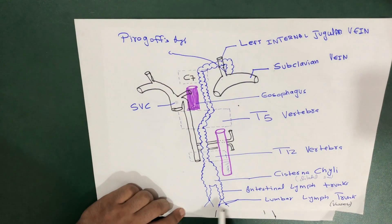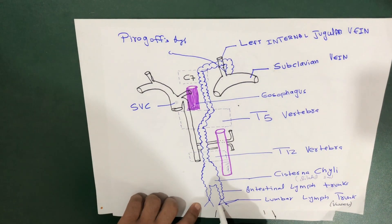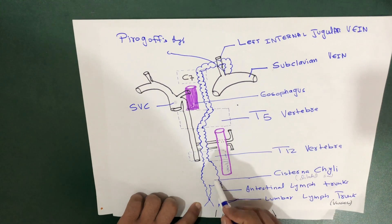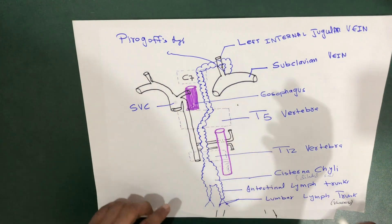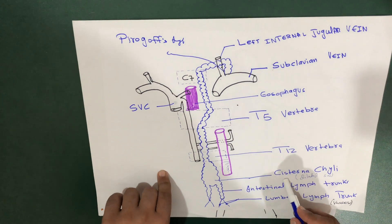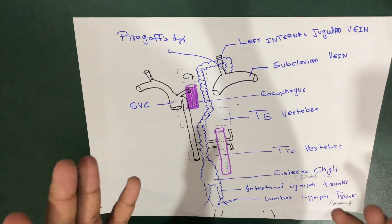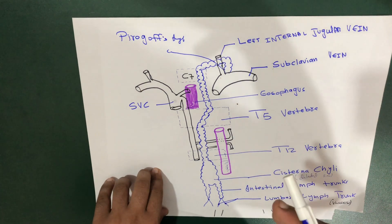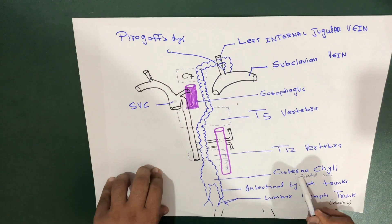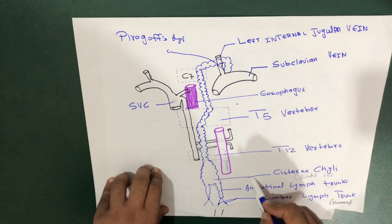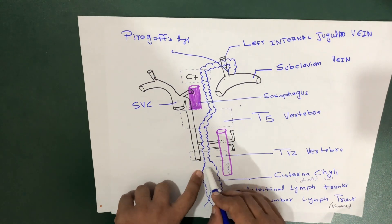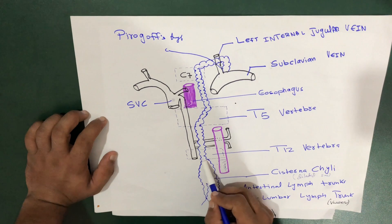The lymph from the lower limbs gets collected and moves upward. The intestinal lymph also moves upward and enters into this dilated sac called the cisterna chyli. It's just a dilated sac at the beginning of the thoracic duct.